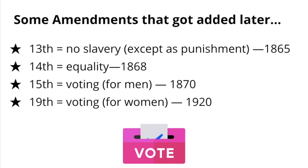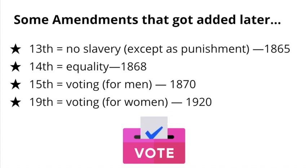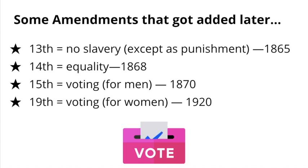Now, just because these rights were on paper, that doesn't mean that everyone actually got these rights in real life. Throughout U.S. history, people of color had to fight to get these rights added to the Constitution, and then had to keep fighting to make the government actually respect these rights. Even today, there's a big gap between the rights people are supposed to have and the rights they actually get in real life. That's what we're going to start discussing tomorrow. Thanks for watching — I'll see you tomorrow.